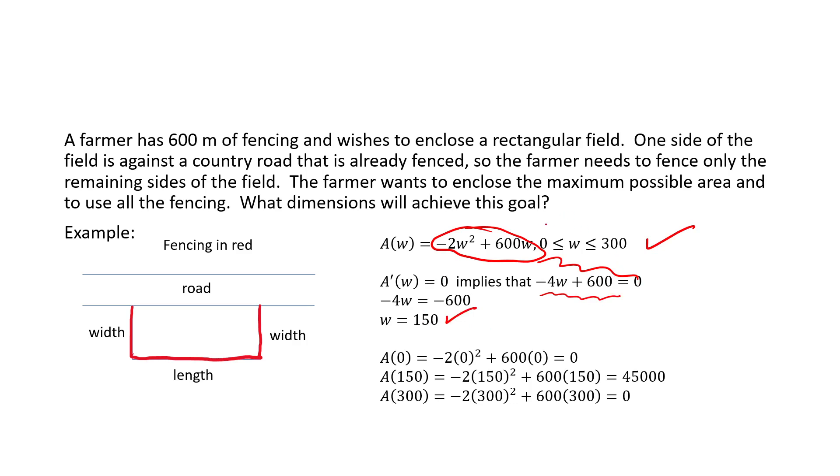At that point, we've got a couple of end values of our domain, zero and 300. We also have a value in between those that sets the derivative equal to zero. So our algorithm tells us to sub each of those values into the area formula. A at zero would be zero, A at 150 would be 45,000, and A at 300 would be zero.